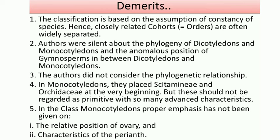Fourth demerit: in Monocotyledons, they placed Cyperaceae and Orchidaceae at the very beginning, but these should not be regarded as primitive since they have many advanced characteristics. Whatever group is placed at the beginning is considered primitive, and whatever is placed last is considered advanced. Keeping Orchidaceae and Cyperaceae as primitive is incorrect, as they possess widely advanced characteristics. Furthermore, in the class Monocotyledons, proper emphasis was not given to the relative position of the ovary and the characteristics of the perianth.